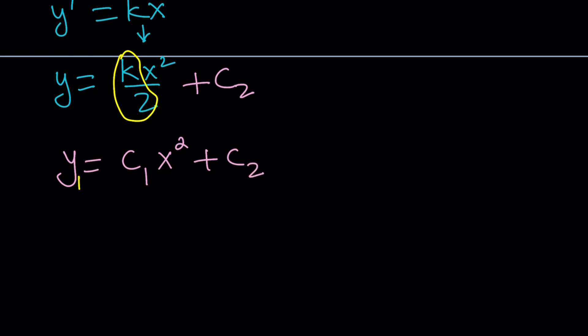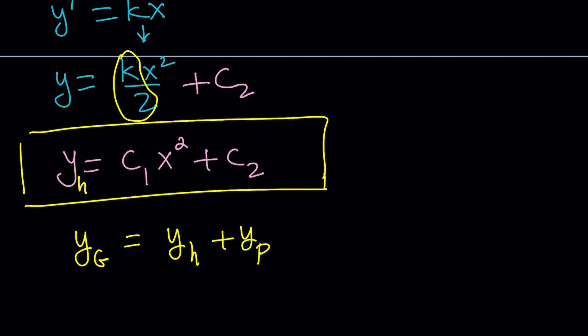But this is the y sub h. What does that mean? This is the solution to the homogeneous version. We don't have a homogeneous equation, but solving the homogeneous equation is actually a great step. A small step for me, a giant step for the mankind. So this is my homogeneous solution. And I'm going to find the general solution. And the general solution, like y sub g, is a homogeneous solution plus the particular solution.